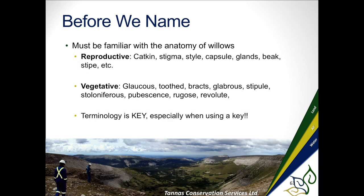Key terminology for willows includes: catkin, stigma, style, capsules, glands, beak, and stipe. Is it glaucous? Glaucous is a bluish-white powdery surface on the leaf — not the same as glabrous, which refers to hair. The best way to find glaucous is to rub the leaf very lightly and see if it changes color by scraping off the powder. Rubbing too hard crushes the cells and changes the color anyway, so be very light.